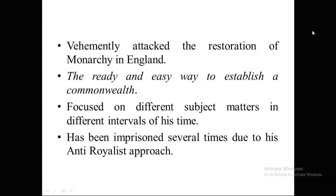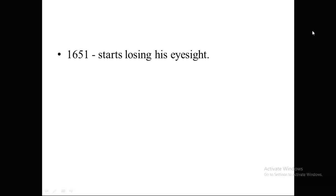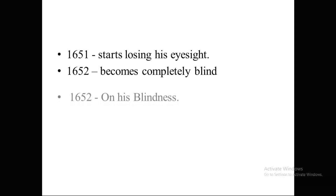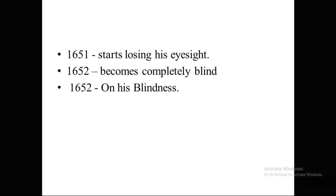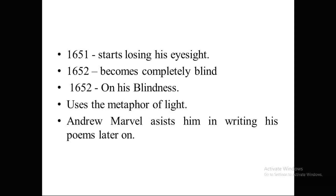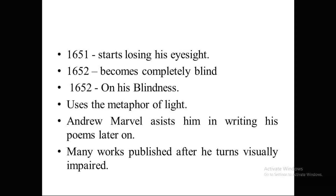Milton was a writer who focused on different subject matters at different intervals of his life. He was imprisoned several times due to his anti-royalist approach, and it was friends like Andrew Marvell who did him the favour of securing his release. It was in the year 1651 that Milton began gradually losing his eyesight. By 1652 he became completely blind, and it is in the year 1652 that the poem On His Blindness was written. After becoming blind, with the assistance of Andrew Marvell, he published Paradise Lost, Paradise Regained, and Samson Agonistes.